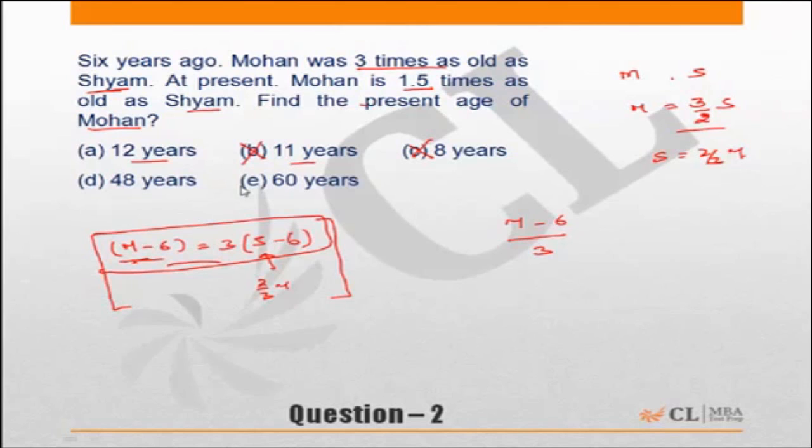Now out of the remaining choices start checking them one by one. If Mohan's current age is twelve, which is choice A, then as per the question Mohan's current age is one and a half times Shyam's age, so Shyam's age should be eight. And six years ago Mohan's age was twelve minus six was six, while Shyam's age was two. This is a multiple of three, or two into three is six. So choice A is the correct answer.